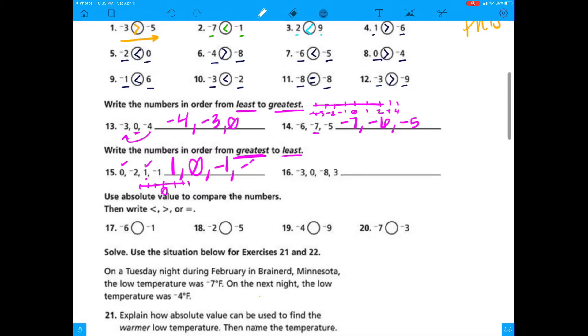When we do these, it's great to draw your own or to help you visualize, model it. That's awesome. Whatever strategy you're using, make sure you check your answer. Number 16, the greatest number is 3, followed by 0. Next would be negative 3 and negative 8.